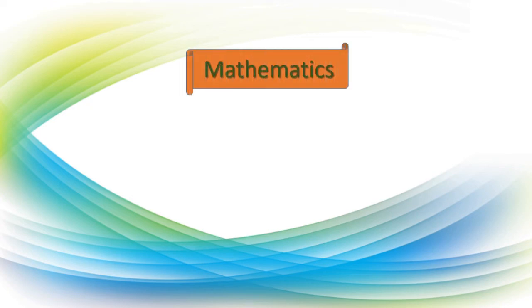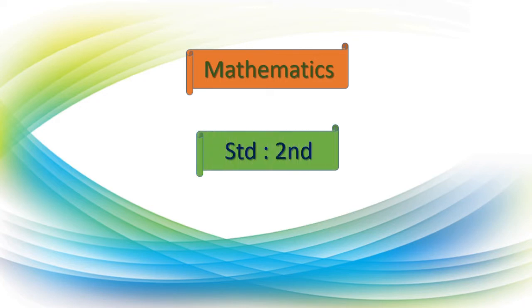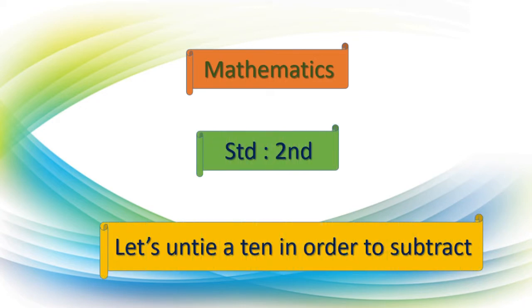Welcome to our math class of standard second. Today's topic is 'Let's untie a 10 in order to subtract.' Dear children, you know how to do addition and different ways of addition like counting forward. But today we are going to learn subtraction, which means reducing. The method we will use is: let's untie a 10 in order to subtract.